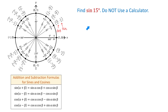Now, the angle of 15 degrees is not an angle on the unit circle. To find the value of sine of 15 degrees, we need to write 15 degrees as a sum or a difference of two angles from the unit circle. For example, we can write 15 as 60 minus 45.